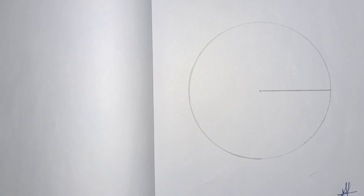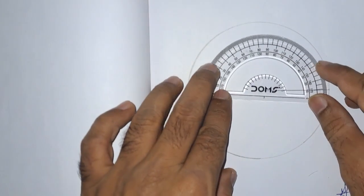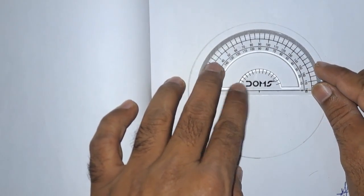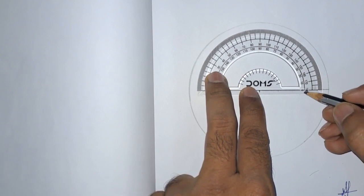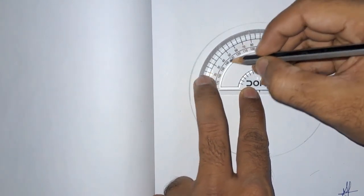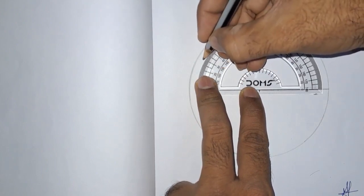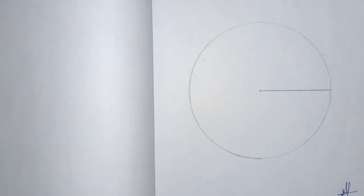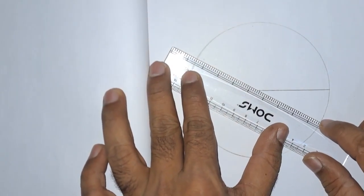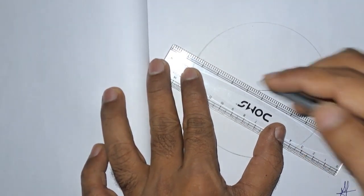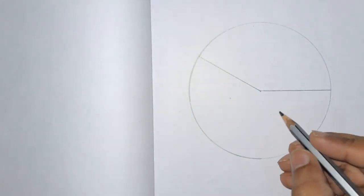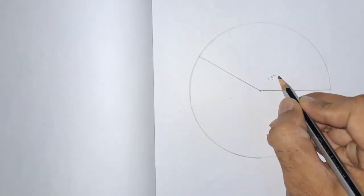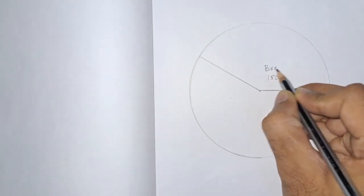Next, from here we are having the first item, that is bread. Bread is about 150 degrees. With the help of the protractor, we will draw 150 degrees. Here it is 0, starting from here. It is 150 here. Now we will join this point to the center point. We will get 150 degrees, and the item name is bread.